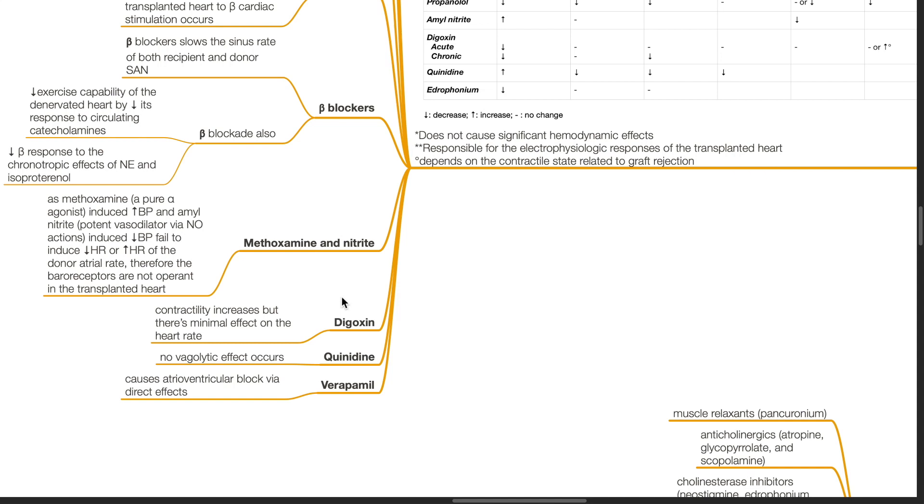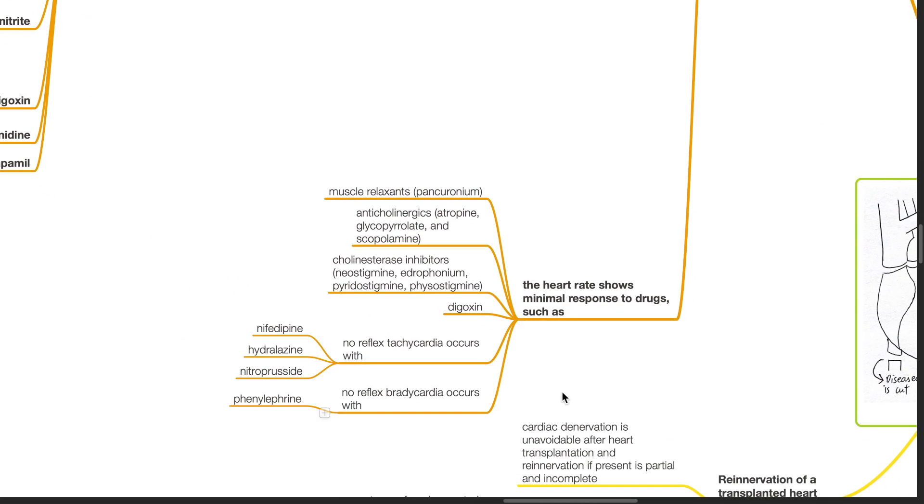For digoxin, contractility increases but there is minimal effect on heart rate. Quinidine does not have vagolytic effects. Verapamil causes atrioventricular block via direct effects.